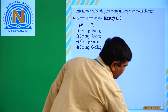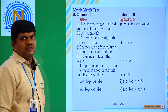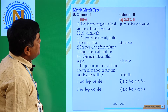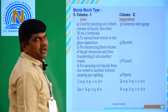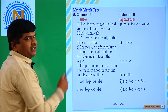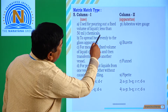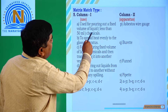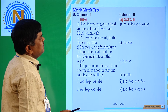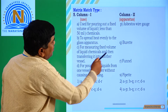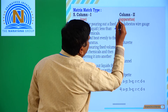Next question is a match type question. There are two columns: column 1 is uses and column 2 is apparatus. Option A in column 1 is: used for pouring out a fixed volume of liquid chemicals (less than 50 ml) — this is related to burette. Option A matches Q.